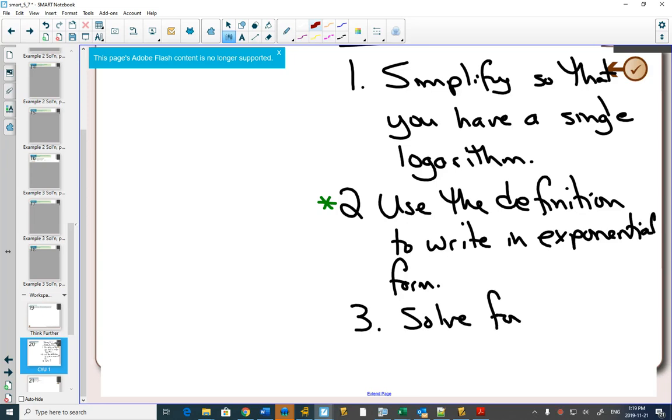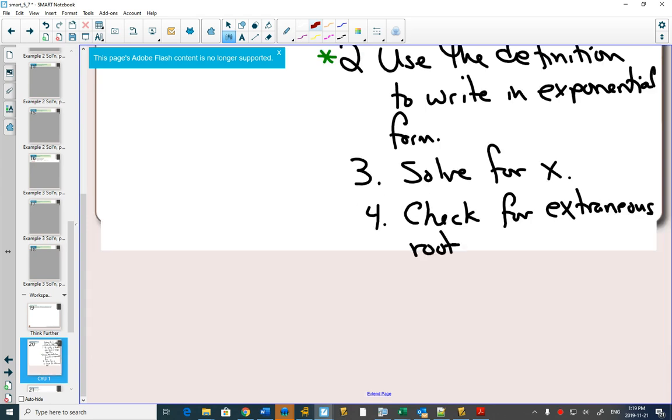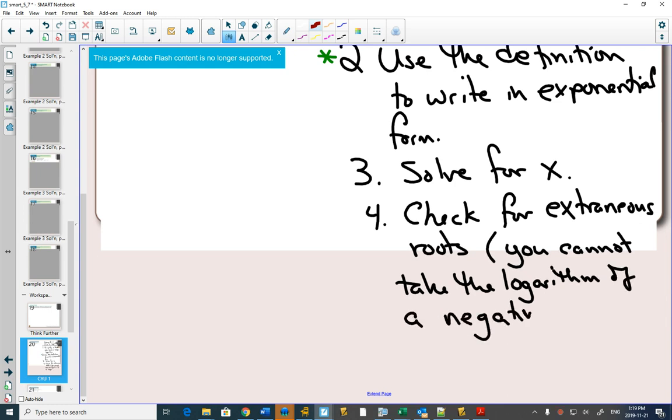you're just going to solve for x. And step four is you're going to check for extraneous roots because you can't take the logarithm of a negative number.